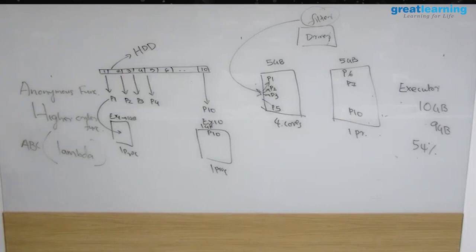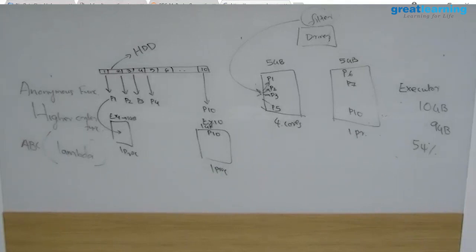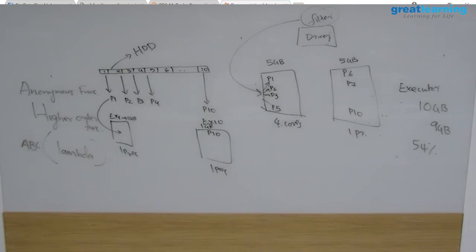In Spark, once you create an RDD your data is ready, and then you process it using transformations. You can look at the Spark official website at spark.apache.org. Under documentation, the latest release is 2.3.0. You can see all Spark versions there — 1.6.3 was the last Spark 1 version, and 2.3.0 is the latest.